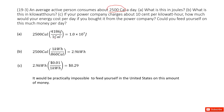This is simple — you just do the unit conversion. We know the constant: 4186 joules per calorie. So you just multiply by that to get the energy in joules.